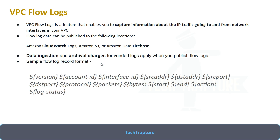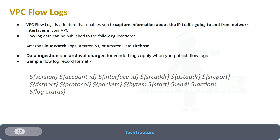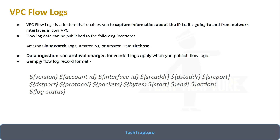Here is a sample flow log record. It shows the version, your AWS account ID, interface ID, source address, destination address, which port the traffic is coming on, the destination port, which protocol it is using, how many packets there are, packet size, start time, end time, action (accepted or rejected), and the log status. I'm going to show you with a demo how this record looks and how we can set up a VPC flow log.